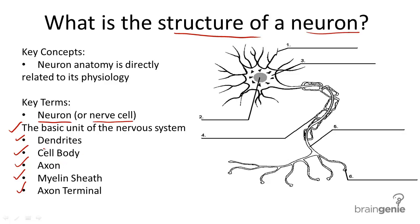Every part other than the cell body are called processes, because they extend outside the cell body. No other cell looks like this in the body.